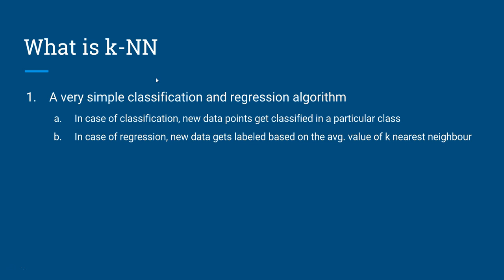You can decide K by experimentation or from past knowledge - how many neighbors you want to consider: 5 neighbors, 10 neighbors, 21 neighbors. You can experiment or apply past learning to get the outcome either in classification or regression. We will look at the general rule of thumb to identify the best K value by looking at the number of data points.